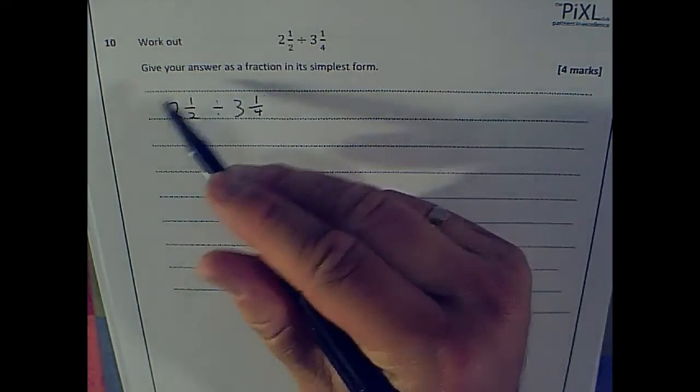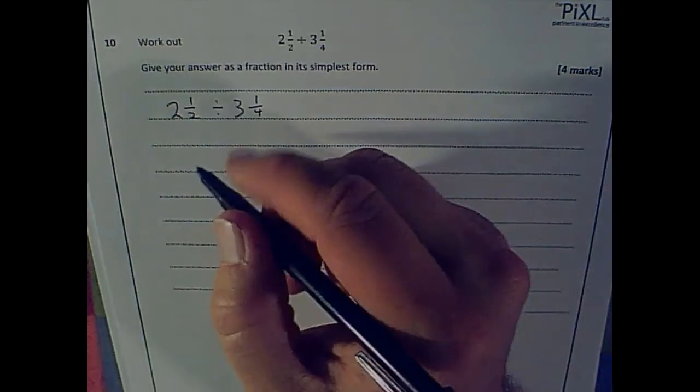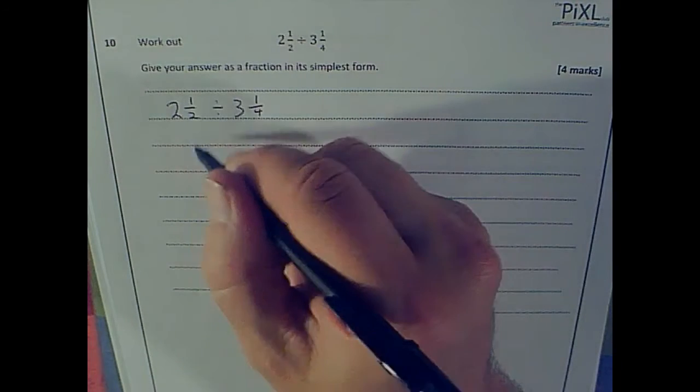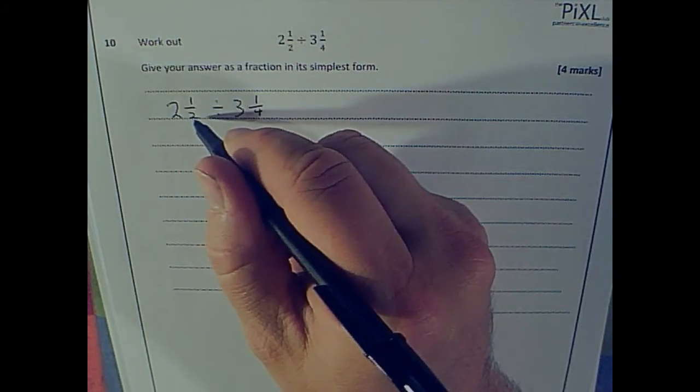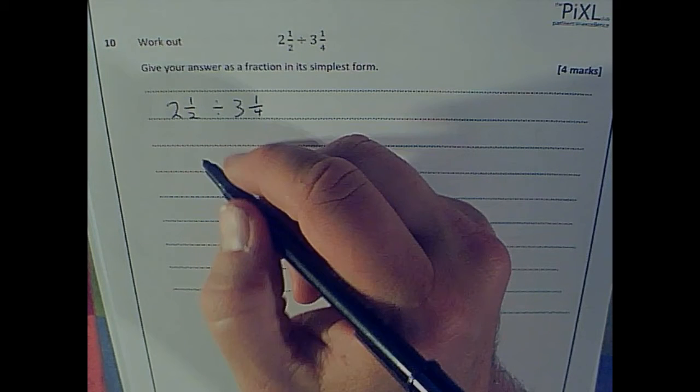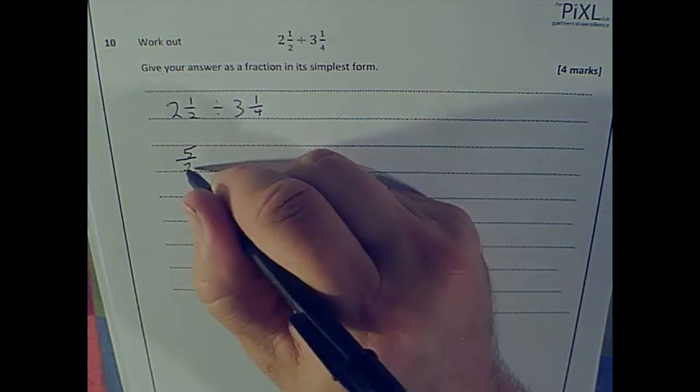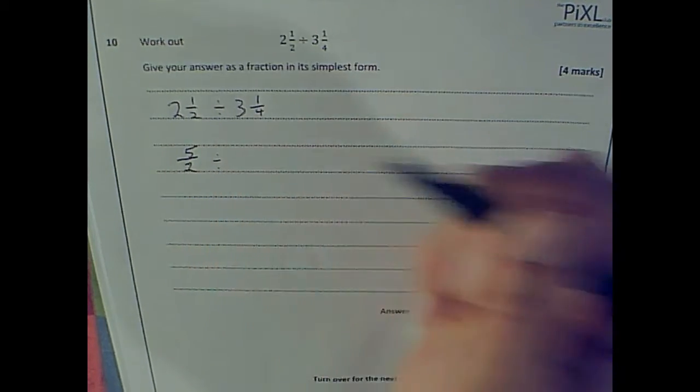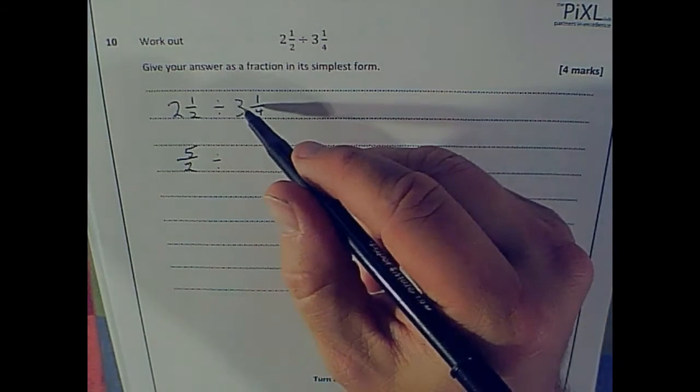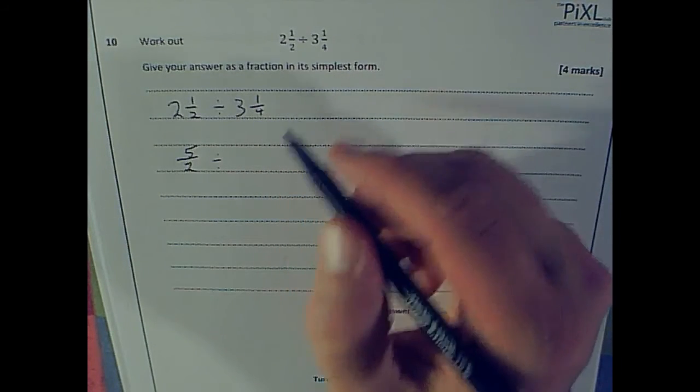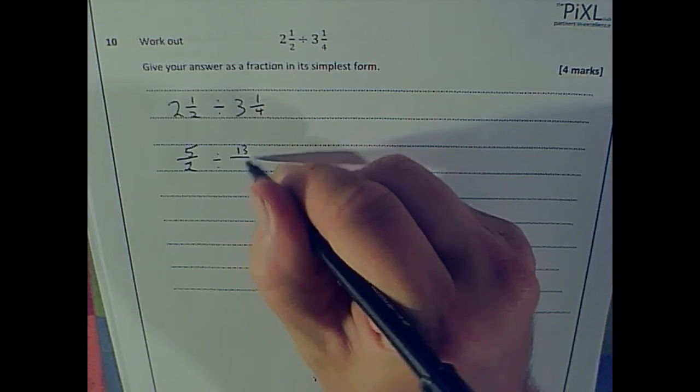So if I write this as an improper fraction, two and a half is the same as, how many halves? Well, in two wholes there are four halves and I've got another half there. So that's the same as five halves. I'm going to be dividing that by how many quarters? Well, in three wholes there are 12 quarters plus one more. Thirteen quarters.